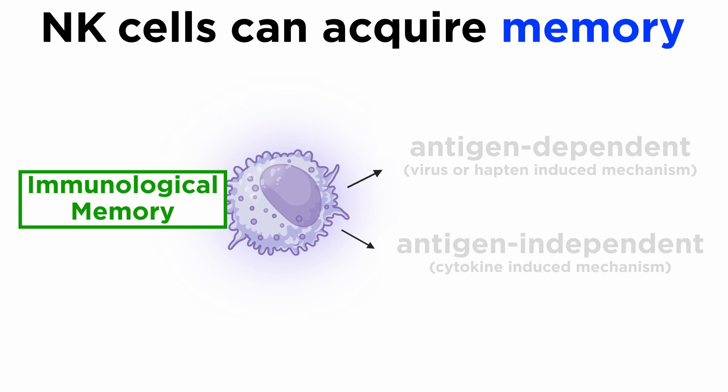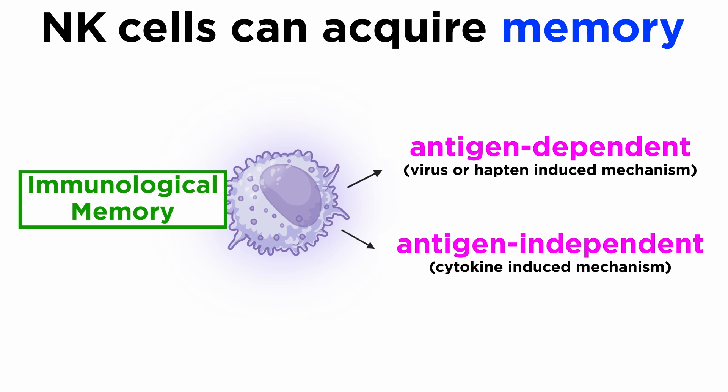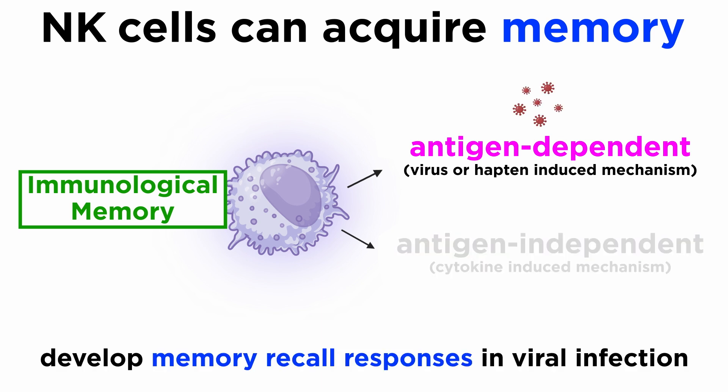Interestingly, unlike other innate cells, NK cells are able to acquire functional qualities associated with immunological memory in both non-infection settings and in response to pathogens. NK cell memory can occur in two ways: either via an antigen-dependent virus or hapten-induced mechanism, or an antigen-independent cytokine-induced mechanism. For example, in a viral infection setting, NK cells are able to respond specifically to it, and in many cases are able to develop memory recall responses.